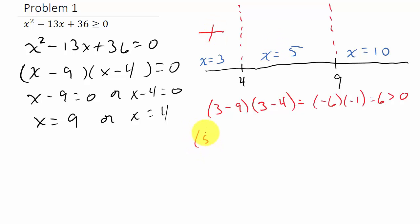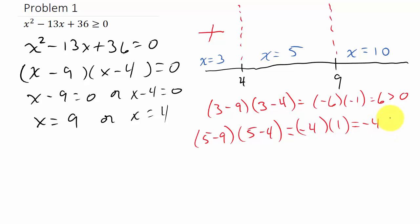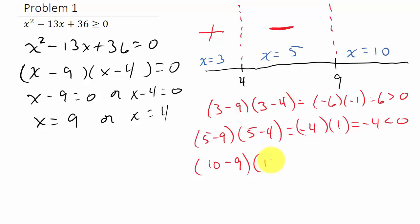Now let's plug in 5: (5 minus 9)(5 minus 4) equals negative 4 times 1, which is negative 4, which is less than 0. So any number between 4 and 9 gives a negative answer. And for x equals 10: (10 minus 9)(10 minus 4) equals 1 times 6, which equals 6 — positive. So any number larger than 9 gives a positive result.